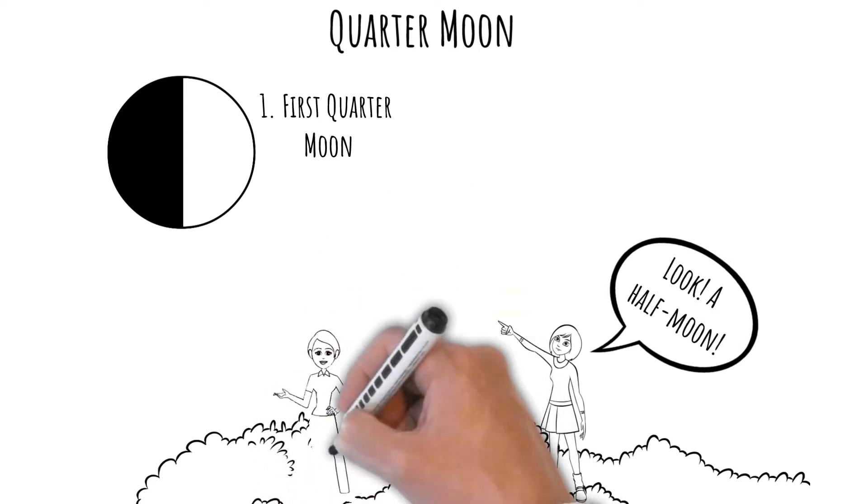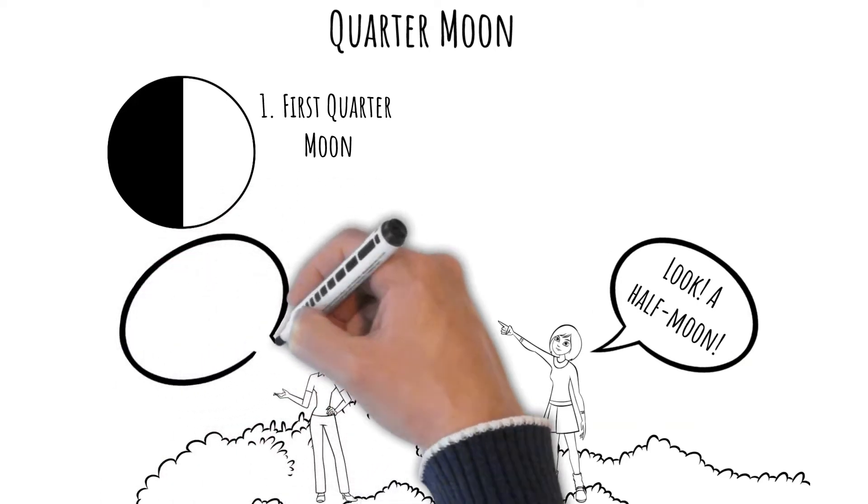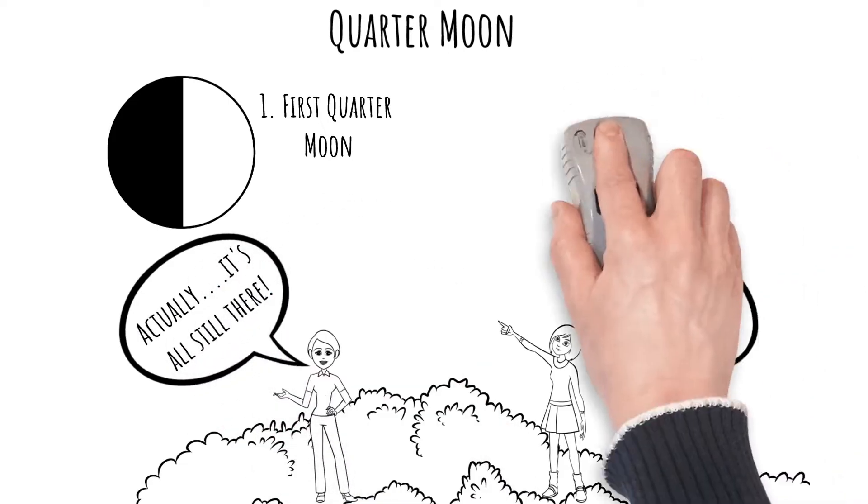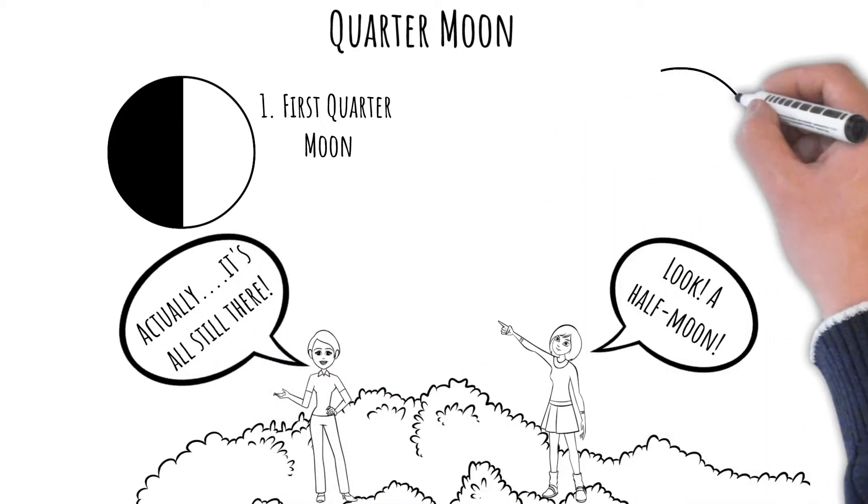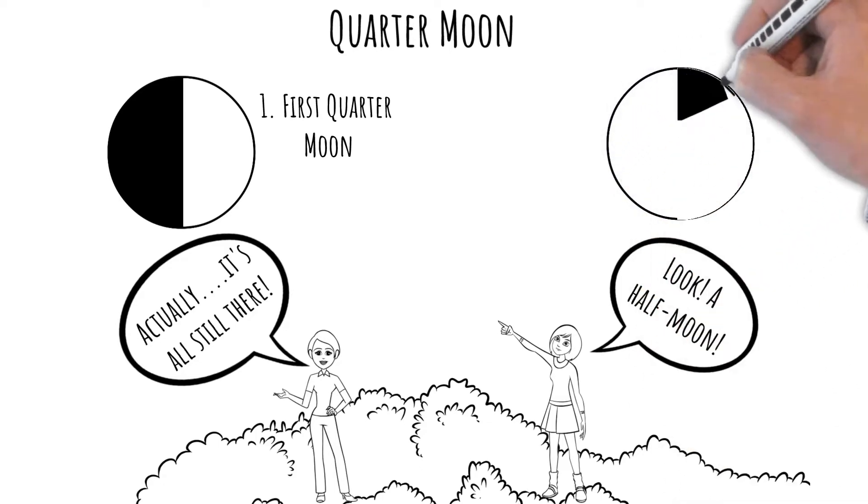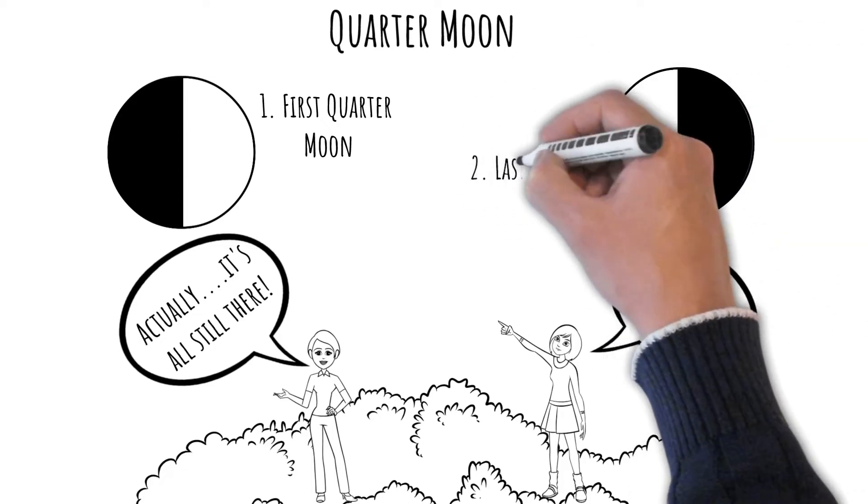With the last quarter moon, you again just see half of the moon illuminated and this is when the moon is three quarters of the way through its monthly cycle. Its illuminated side will look to grow smaller daily until the new moon is here again.